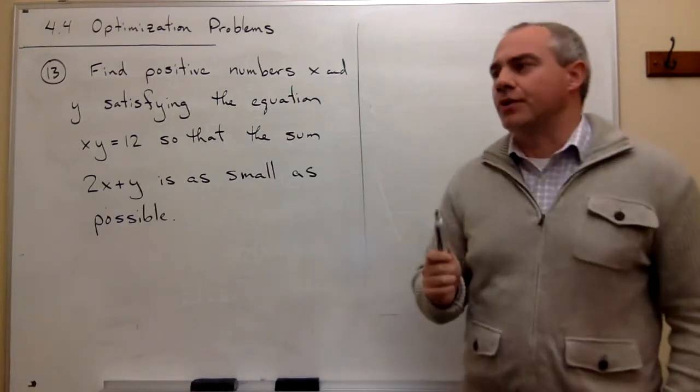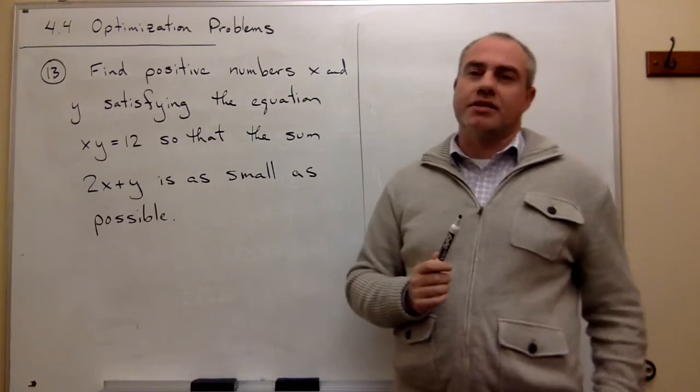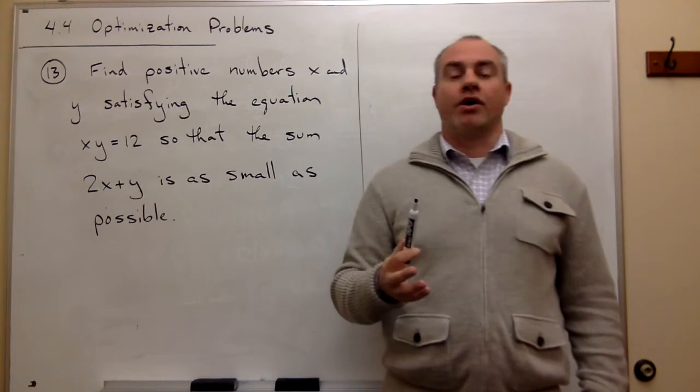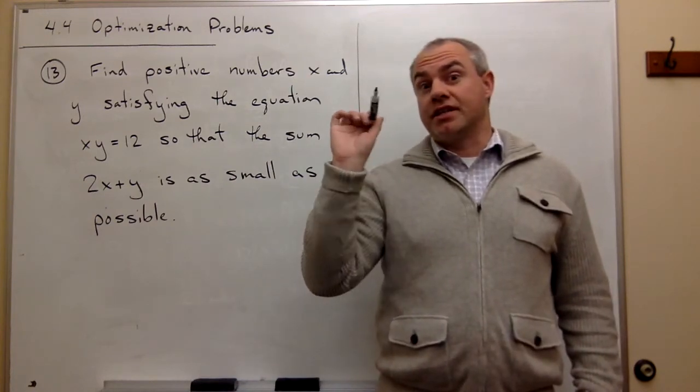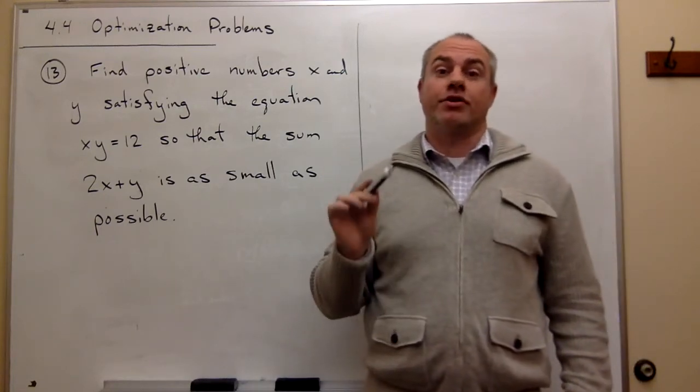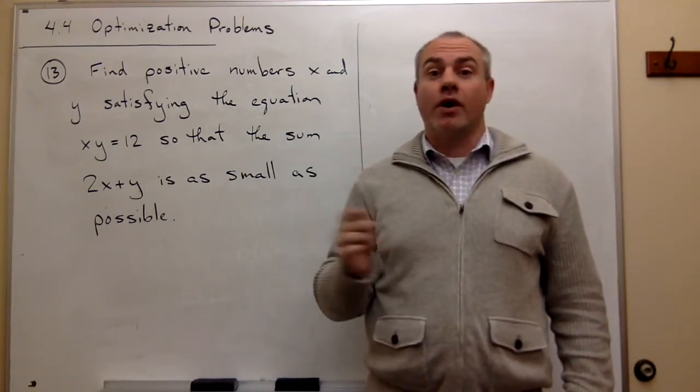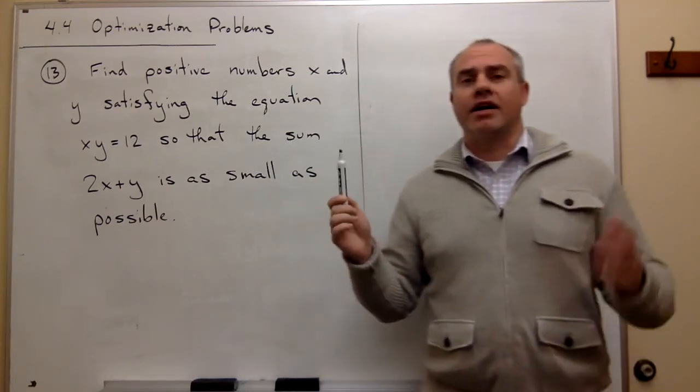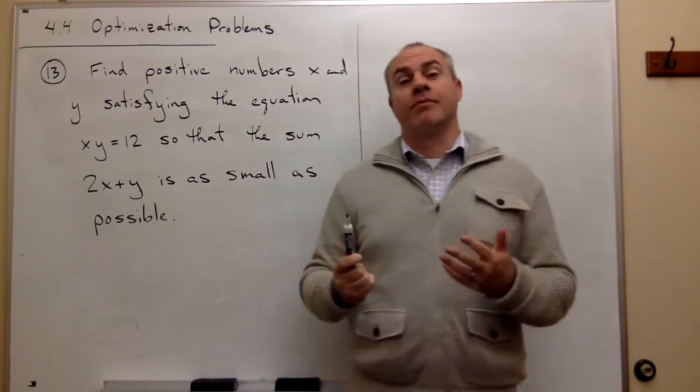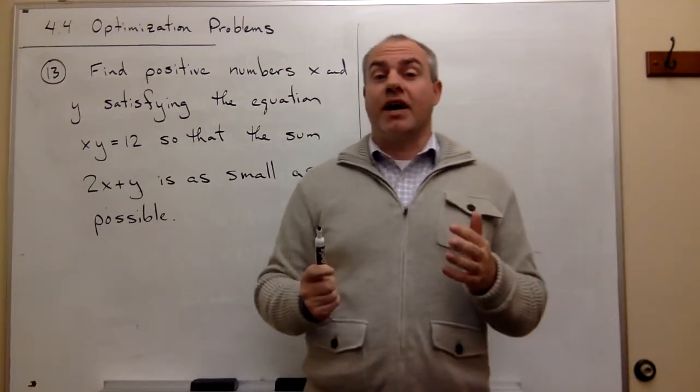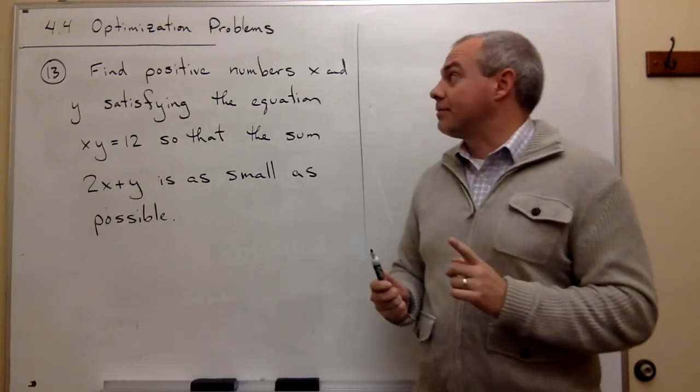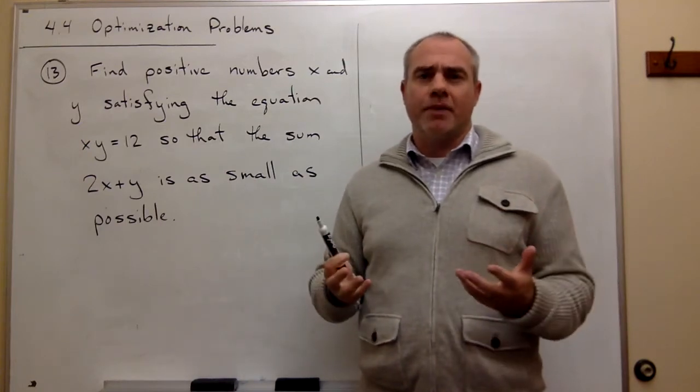But the second thing that we would do after we drew a picture, which isn't so relevant in this case, is we ask the question: what is it we're trying to make big or small here? And really this is the key element of all optimization problems. If you don't answer this part of the question correctly then you have no idea what you're doing. A lot of times you might do an optimization problem and you just feel like 'man, I'm just lost on this problem,' and the reason you're feeling that way is because you haven't answered the number one question you need to answer when you do an optimization problem.